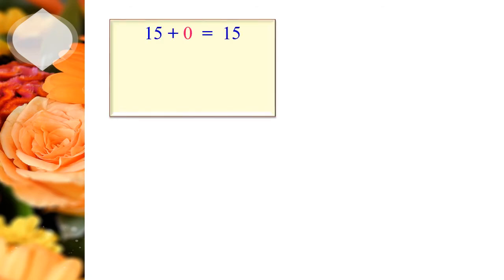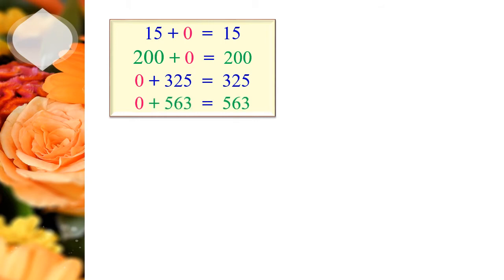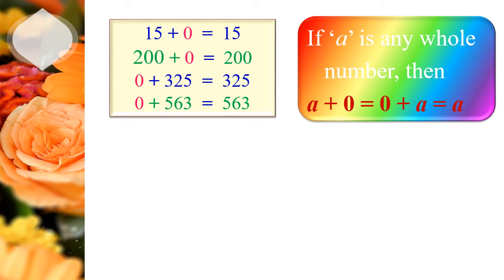Let's see some more examples. Fifteen plus zero equals fifteen. Two hundred plus zero equals two hundred. Zero plus three hundred and twenty-five equals three hundred and twenty-five. Zero plus five hundred and sixty-three equals five hundred and sixty-three. So we learn from this: when you add any number to zero, or zero to any number, it does not change the value. We define: if A is any whole number, then A plus zero equals zero plus A equals A.